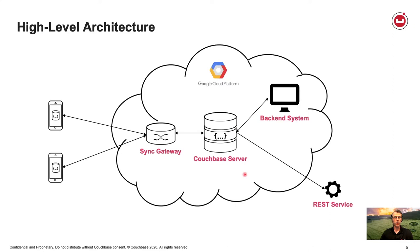The deployment for this demo uses one or two Android emulators running the user profile mobile app, connecting to Sync Gateway in GCP. Sync Gateway is configured to connect to a Couchbase Server cluster also in GCP. There's also a Node.js-based web application simulating a backend system running on another VM in GCP, and then a third-party REST service to send emails.